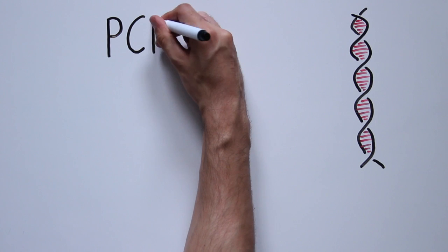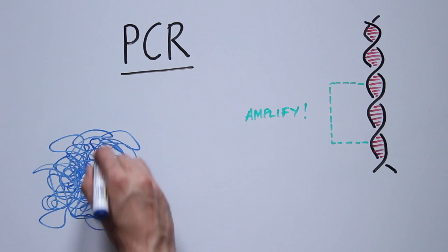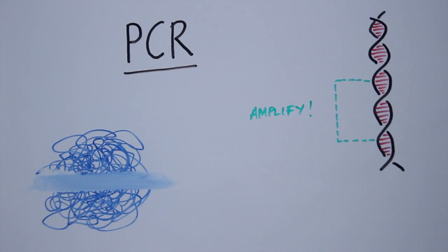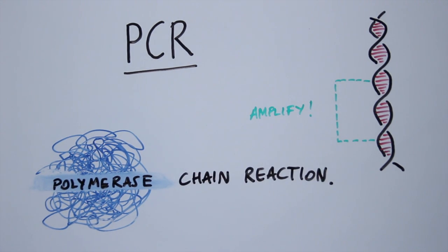PCR lets us amplify a section of the DNA code which we might be interested in. When we use the PCR technique, we use an enzyme called polymerase that all living beings use to replicate their own DNA. PCR stands for the polymerase chain reaction.